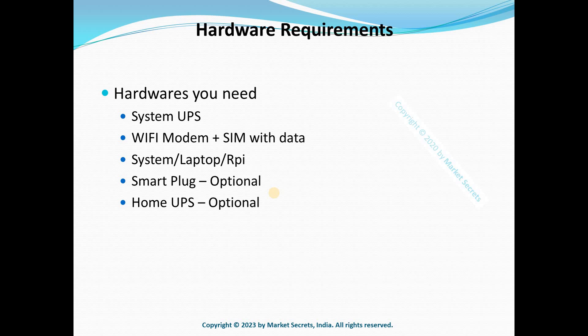I'll shortly show you how my setup looks like. You don't have to buy all these items fresh — if you already have the resources you can use them. For example, if you already have a system or laptop you can use it; you don't have to buy a Raspberry Pi. Likewise, if you have a fiber connection and want to take the risk, you don't need to buy a new Wi-Fi modem. The same goes for the system UPS, home UPS, and smart plug — all optional. Personally, I prefer a dedicated setup for my algo trading platform.